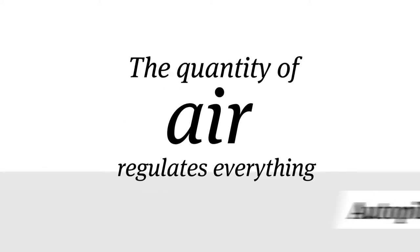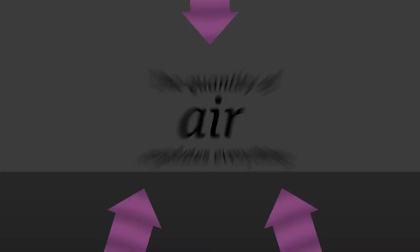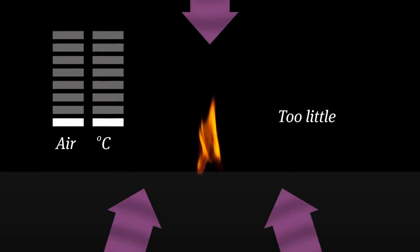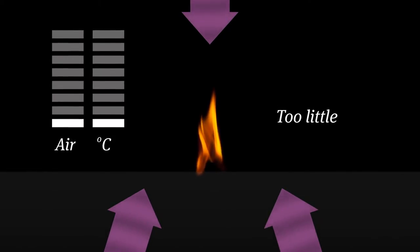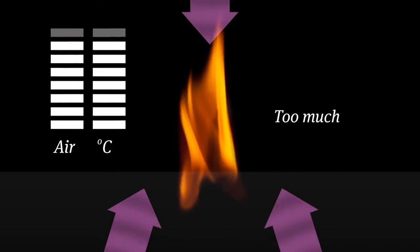It is the quantity of air in the stove that regulates the fire and the combustion. Too little air chokes the fire and results in a low temperature. Too much air makes the fire flare up and the temperature rises.